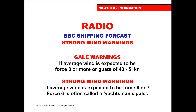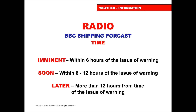Strong wind warnings and gale warnings: a gale warning is given if the average wind is expected to be force 8 or more, or gusts of 43 to 51 knots. Strong wind warnings are given if the average wind is expected to be force 6 or 7 — force 6 is often called the yachtsman's gale. Timing in the shipping forecast uses the terms imminent (within six hours), soon (six to twelve hours), and later (twelve to twenty-four hours from the warning).